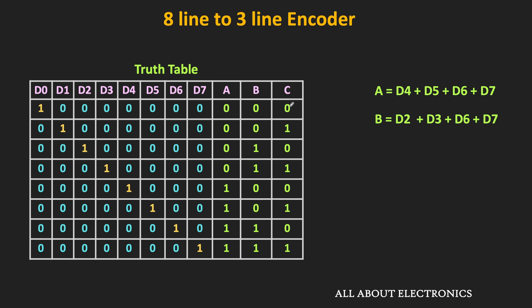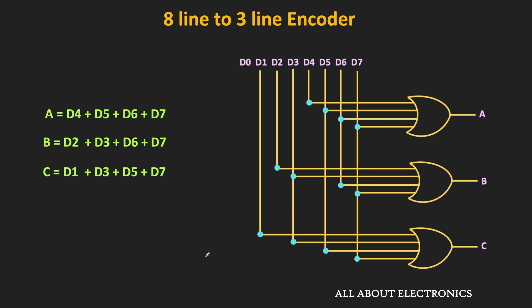Output C is high when D1, D3, D5, or D7 is high, so the logical expression for C is D1 + D3 + D5 + D7. In this way, we obtain three logical expressions for outputs A, B, and C, and all three can be implemented with OR gates. This gives us the complete logic circuit of the 8-line to 3-line encoder.